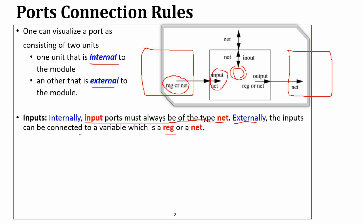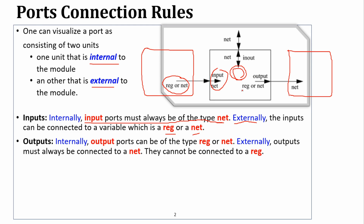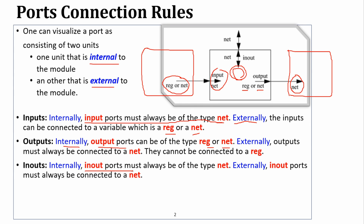Externally, the inputs can be connected to a variable which is a reg or a net. The output port can be of the type reg or net. But the other module which you connect with the port must be the net type. The output port is net type, both externally and internally.